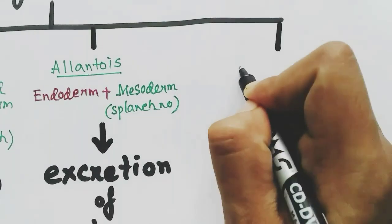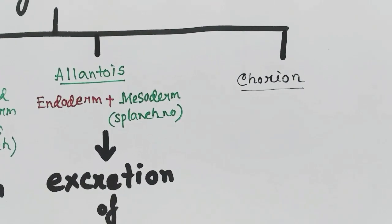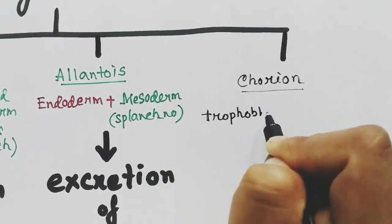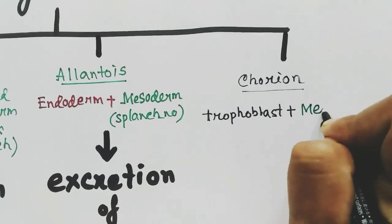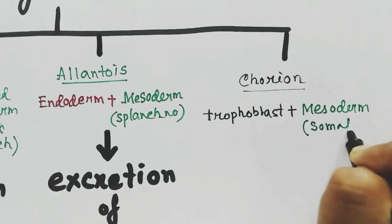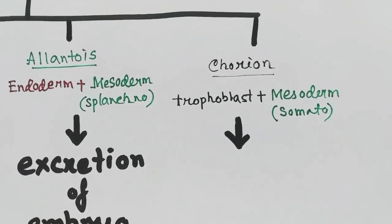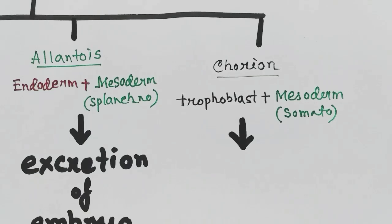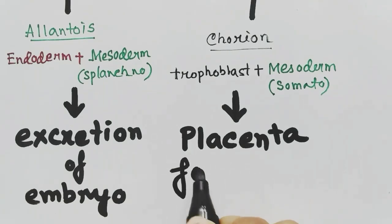Next, the chorion: it has two layers — one made up of trophoblast cells and the other of somatopleuric mesoderm. The chorion helps in the formation of the placenta and also protects the embryo.